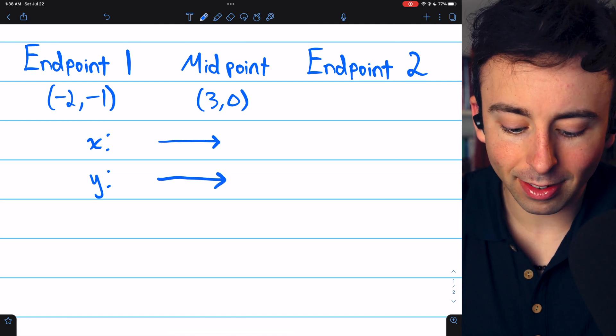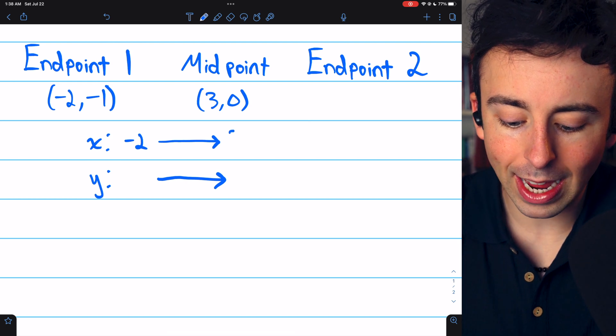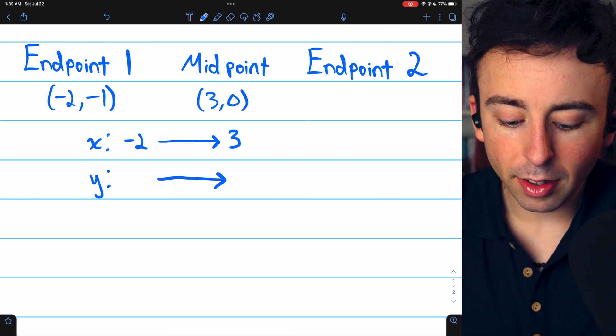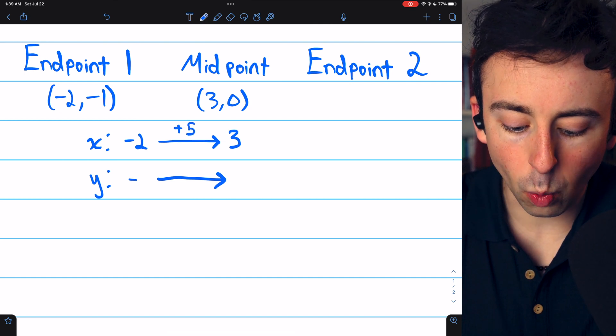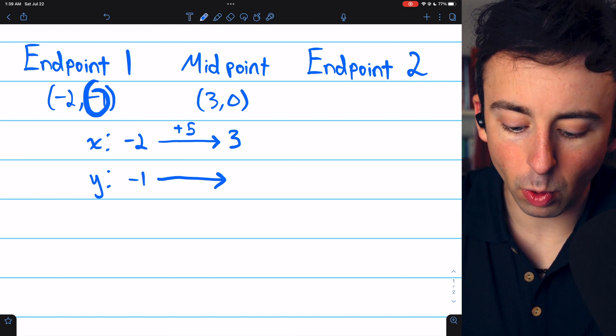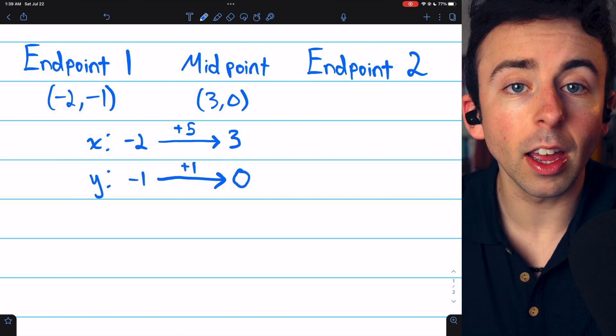In this case, the endpoint had an x-coordinate of -2, and the midpoint had an x-coordinate of 3. So you can see that's an increase of 5. The y-coordinate went from -1 to a y-coordinate of 0, which is an increase of 1.